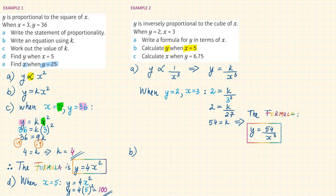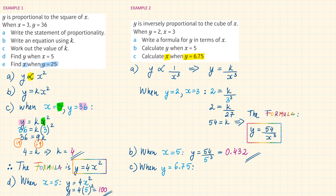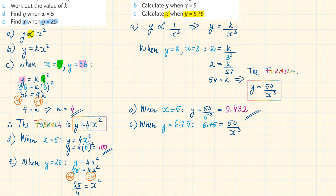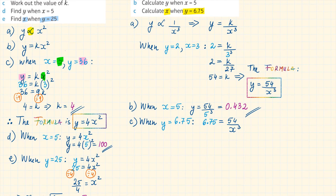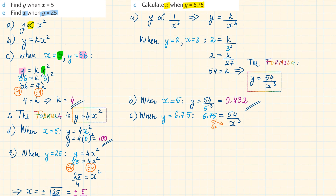Part B: calculate Y when X is equal to 5. When X is equal to 5, we replace X in the formula, so Y equals 54 over 5 cubed. This is equal to 0.432. Part C: calculate X when Y is equal to 6.75. Substituting 6.75 into the formula: 6.75 equals 54 over X cubed. Rearranging — multiplying both sides by X cubed and dividing both sides by 6.75, or simply swapping X cubed with 6.75 — gives X cubed equals 54 over 6.75, which is 8. Cube rooting 8, X is equal to 2.